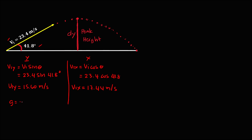The other given values: for y, we have gravity equal to negative 9.8 meters per second squared. We can also note that the final velocity for y equals zero at the maximum height. From these givens we can find the total time of flight.